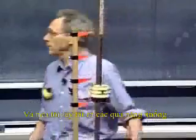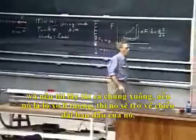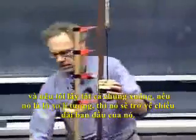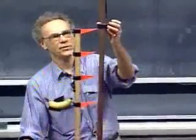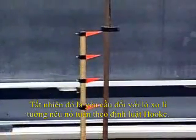All the way down. And if I take them all off, so what I've done is I effectively went along this curve, and if I take them off, if it is an ideal spring, then it goes back to its original length, which it does. That's a requirement, of course, for an ideal spring if it behaves according to Hooke's law.